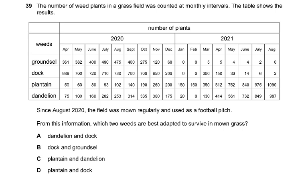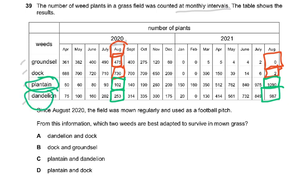Question number 39: the number of weed plants in a grass field was counted at monthly intervals. From August 2020, the field was mown regularly and used as a football pitch. Groundsel and dock plantain declined sharply, while plantain and dandelion numbers increased significantly after mowing. Which two weeds are best adapted to survive in mown grass? The answer is C: plantain and dandelion.